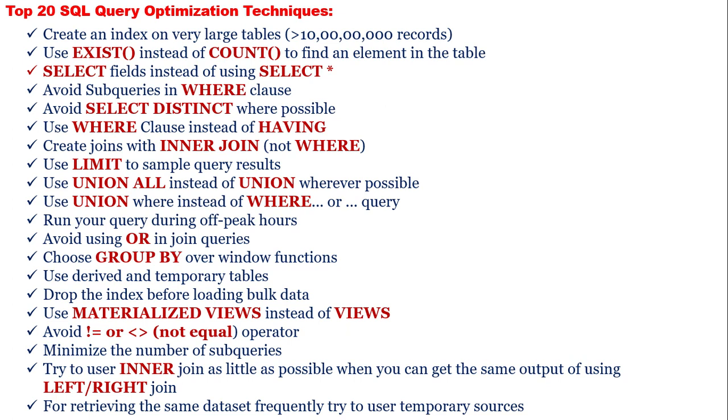Number 18: Minimize the number of subqueries in SQL statements. Number 19: Try to use INNER JOIN as little as possible when you can get the same output using LEFT/RIGHT join. Number 20: For retrieving the same dataset frequently, try to use temporary sources.